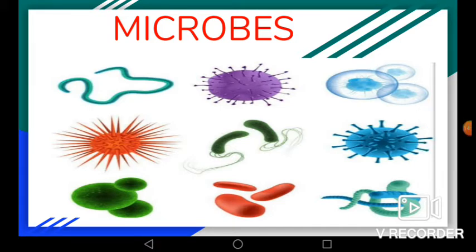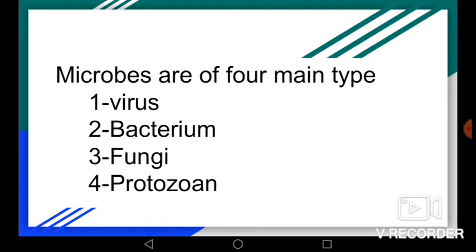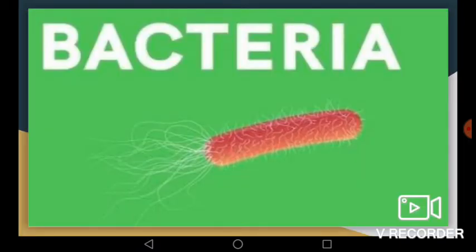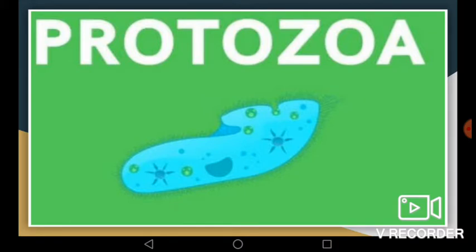Now let's revise the last topic of the chapter: microbes. Microbes are very small living things that cannot be seen with the naked eye. They can be seen only with the help of an instrument called a microscope. Microbes are of four main types: virus, bacteria, fungus, and protozoa.